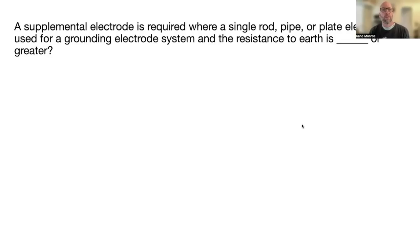A supplemental electrode is required where a single ground rod, pipe, or plate electrode is used for grounding electrode system and the resistance to earth is blank or greater. That's 25 ohms and it's in 250.53a2 exceptions.